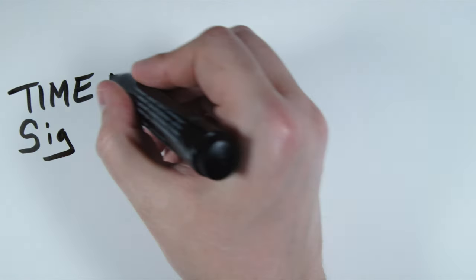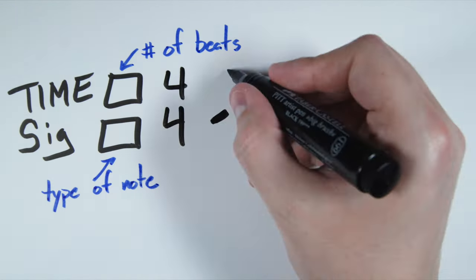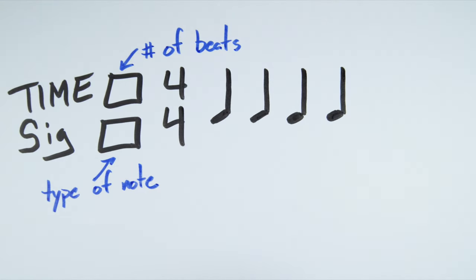In the standard system, each beat of the time signature gets a number. So in the time signature of 4-4, the top number is the number of beats in the measure, and the bottom number is the type of note that gets the beat. So we have four quarter notes, and each one gets a number.